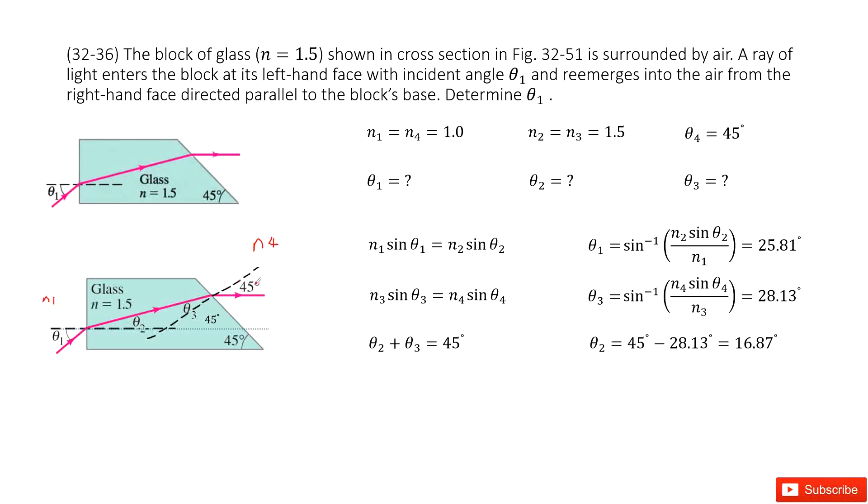We only know theta 4 is 45 degrees. We need to find theta 1, theta 2, and theta 3. So how can we do that? We will consider Snell's law.